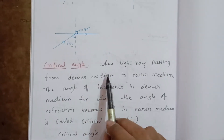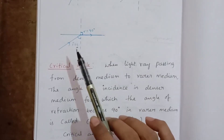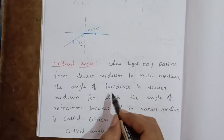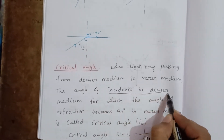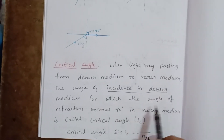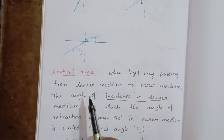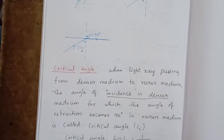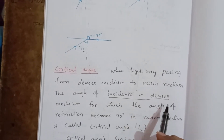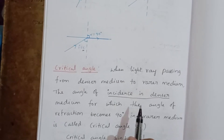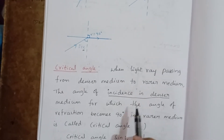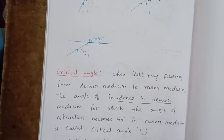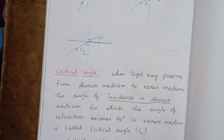Definition: when a light ray passes from a denser medium to a rarer medium, the angle of incidence in the denser medium for which the angle of refraction becomes 90 degrees in the rarer medium is known as the critical angle.